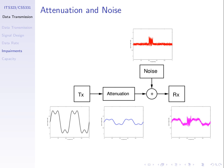That covers the main impairments: primarily attenuation and noise. Next week we'll summarize what we've learned about signals and finish by looking at equations that relate bandwidth to data rate — some capacity equations.